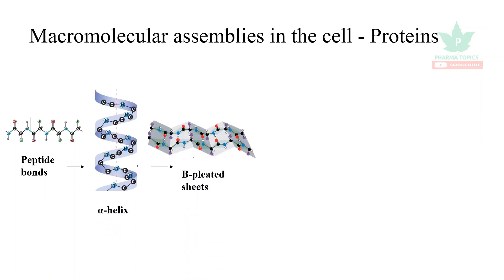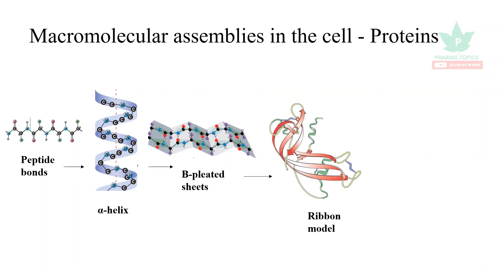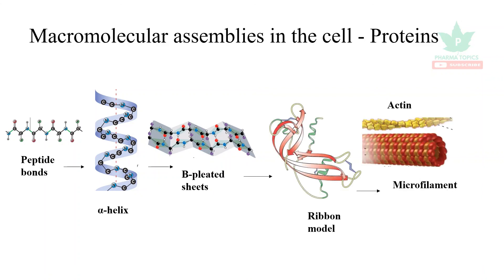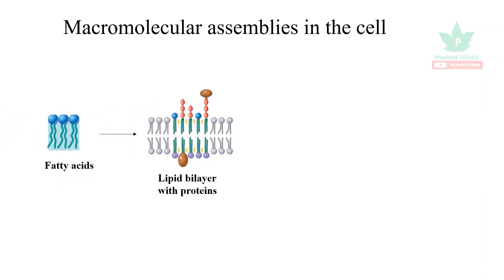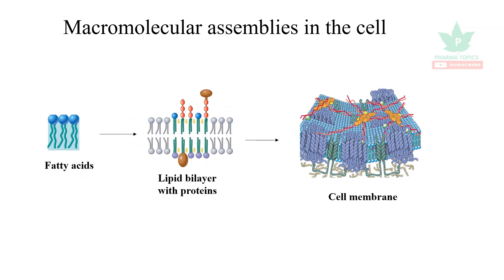The next macromolecular assembly is proteins. They are formed from amino acids connected as peptides, which form alpha helices. These combine to form beta pleated sheets, which combine to form ribbon models, and ultimately form regulatory or functional proteins such as actin, myosin, and microfilaments. The next macromolecular assembly is the cell membrane: fatty acids combine to form a lipid bilayer with proteins, assembling into the cell membrane.